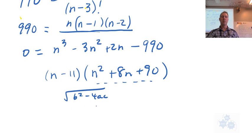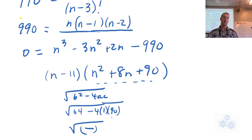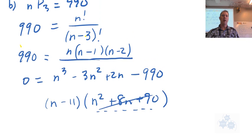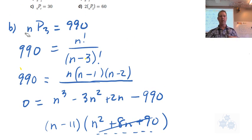So B squared, this would actually be 64, right, minus 4 times A is 1, C is 90. So 4 times 90 is 360, right? So we're going to have a negative number here. So what that means is that there are no roots associated with that factor. And that means that N equals 11 is our solution. And that makes sense because, you know, we want to find out what that total would be. So it's greater than 3, so that's good. And, of course, N is the only solution to this. So 11 pick 3 is 990.